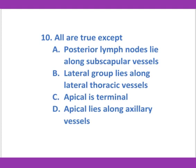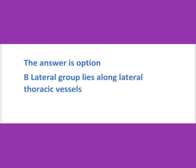All are true about axillary lymph nodes except — (a) posterior lymph nodes lie along subscapular vessels, (b) lateral group lies along lateral thoracic vessels, (c) apical is terminal. The answer is option B: lateral group lies along lateral thoracic vessels.